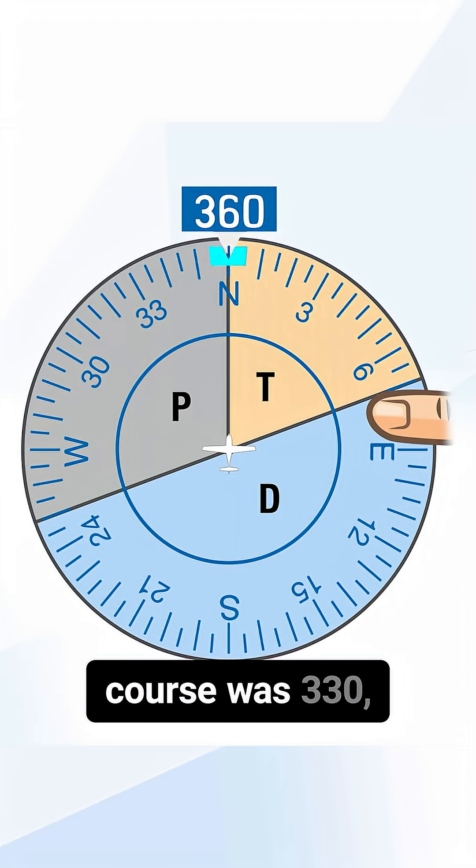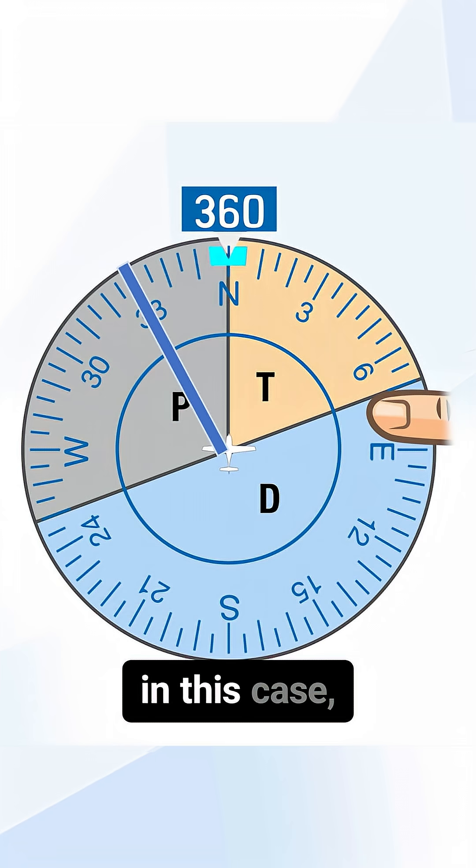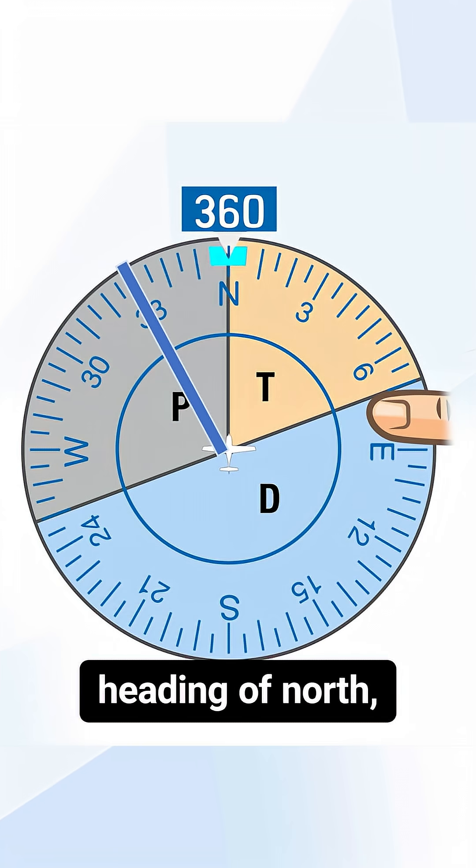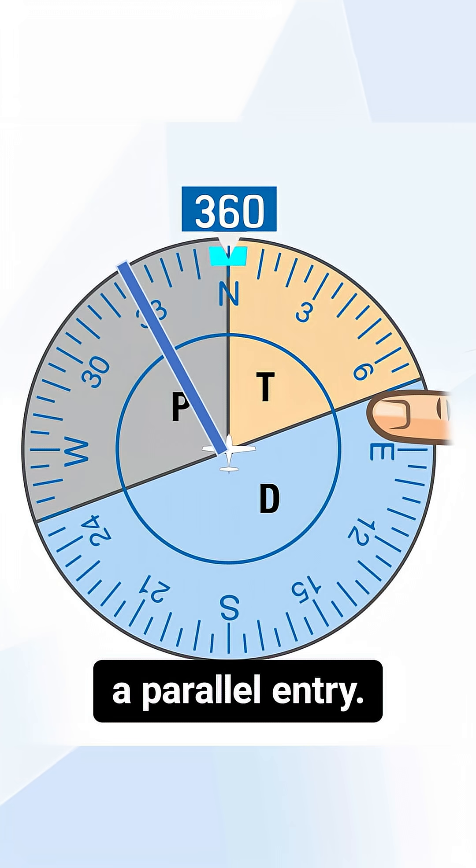If our holding course was 330, in this case with an arrival heading of north, we would execute a parallel entry.